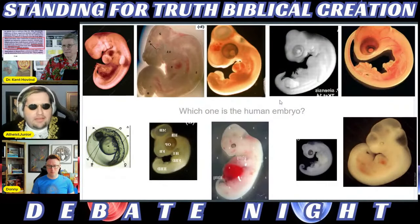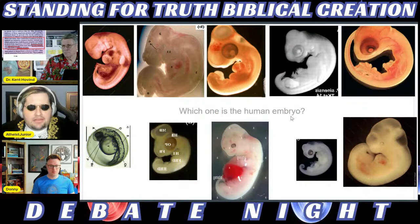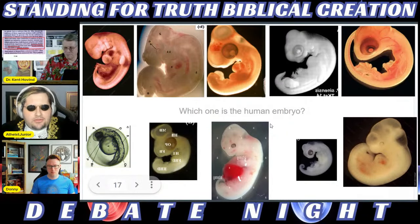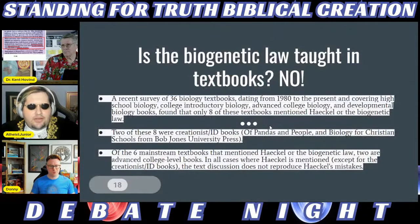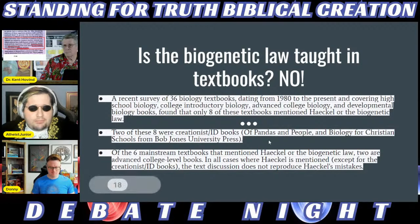I'd like to ask Kent: which one is the human embryo? On this slide I have one human embryo alongside dog, pig, salamander, lizard, and fish embryos. They look pretty similar — I'll leave it to the audience. A recent survey of 36 textbooks from 1980 to the present found only eight mentioned Haeckel or the biogenetic law, and two of those were creationist books.